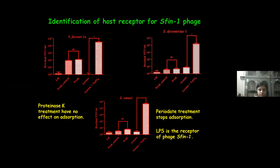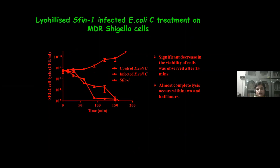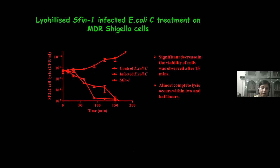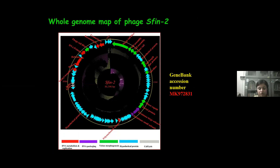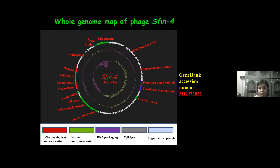We infected SF-1 into E. coli C cells and found that SF-1-infected E. coli C can lyse multidrug-resistant Shigella species more rapidly than SF-1 phage alone. These SF-1-infected E. coli C cells have more activity than SF-1 phage alone, and we have applied these SF-1-infected E. coli C cells for a patent. This is the whole genome map of phages SF-1 through SF-6, and all these sequences have been submitted to the NCBI database under their respective accession numbers.